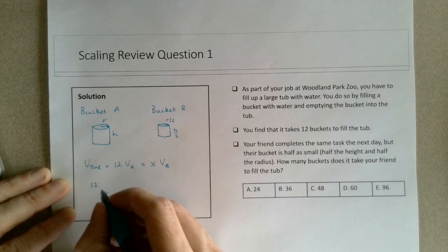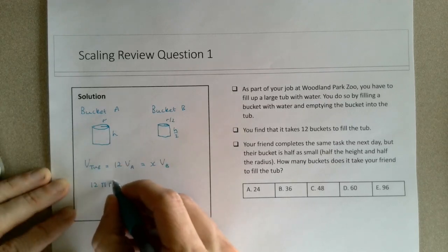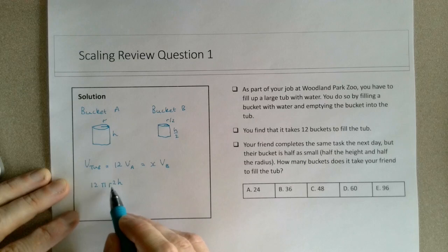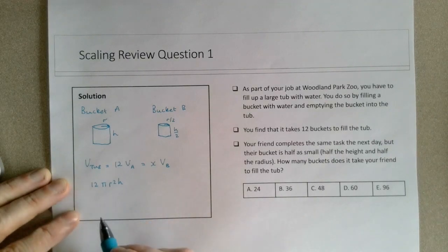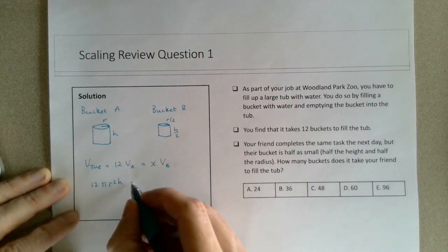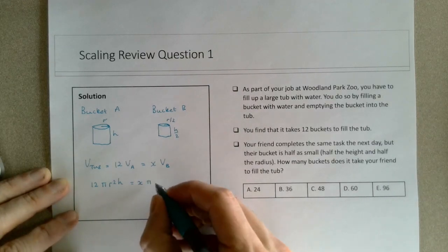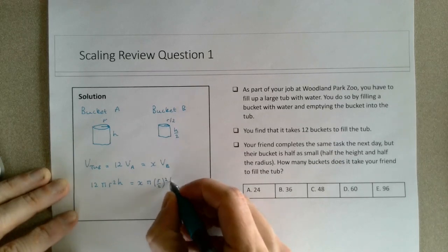So I would have 12 times the volume of A, which is just the volume of a cylinder, pi r squared h, again showing you the volume depends in this case on two linear dimensions, but one of them is squared, so this is sort of linked to volume being proportional to L cubed. And then this is equal to x times the volume of B, this would be pi, and r over 2 all to be squared times h over 2.